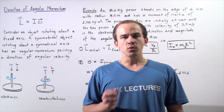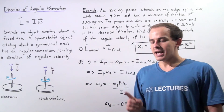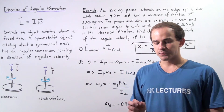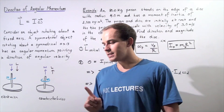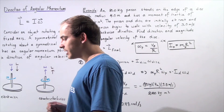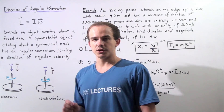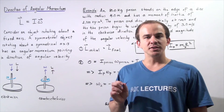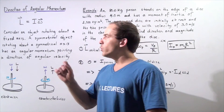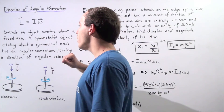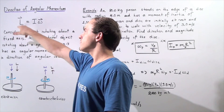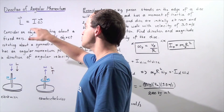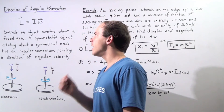Let's suppose that we have a rotating symmetrical object that is rotating about a symmetrical fixed axis. Earlier we said that if we want to calculate the magnitude of angular momentum of the object, and the object's moment of inertia is constant, we can use the following equation. The angular momentum of that particular object is equal to the product of the moment of inertia and the angular velocity of our object.